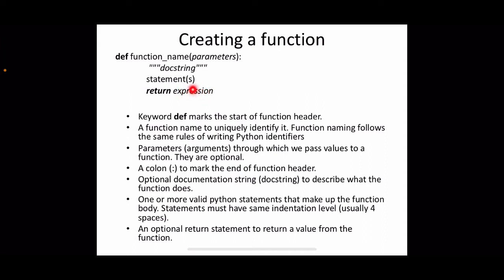The keyword 'def' marks the start of the function header. The function name is used to uniquely identify the function and follows the same rules as Python identifiers. Parameters or arguments are used to pass values to a function — they are optional. A colon marks the end of the function header, followed by an optional documentation string, called a docstring, which describes what the function does.